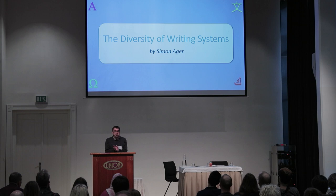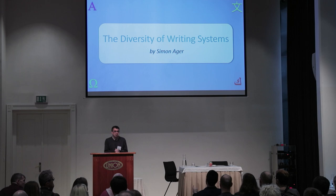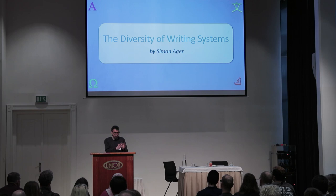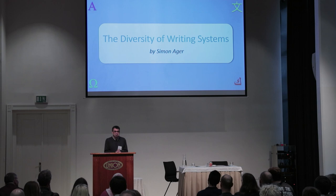Does anybody have any idea how many writing systems are currently in use around the world? How would you define a writing system? If you say the Latin alphabet is used for many languages, that's one writing system. The Cyrillic alphabet is one writing system. In common use, there are maybe about 100 writing systems. There are about 250 natural writing systems on Omniglot at the moment. In this talk, I'm going to focus particularly on the ones you may not have heard of — you've probably heard of the Latin alphabet, Cyrillic, Greek, Chinese, Japanese, but there are a few you may not have heard of.